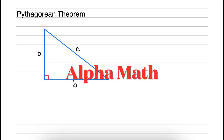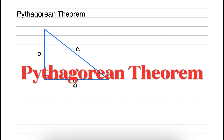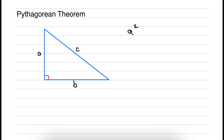Hello and welcome back guys to another Alpha Math video. In this lesson we'll be focusing on the Pythagorean theorem. The two shorter sides are labeled A and B and the longer side is labeled C. The formula is A squared plus B squared is equal to C squared. By the way, we call the longer side the hypotenuse, so you'll be hearing me use that word every now and then in this video.